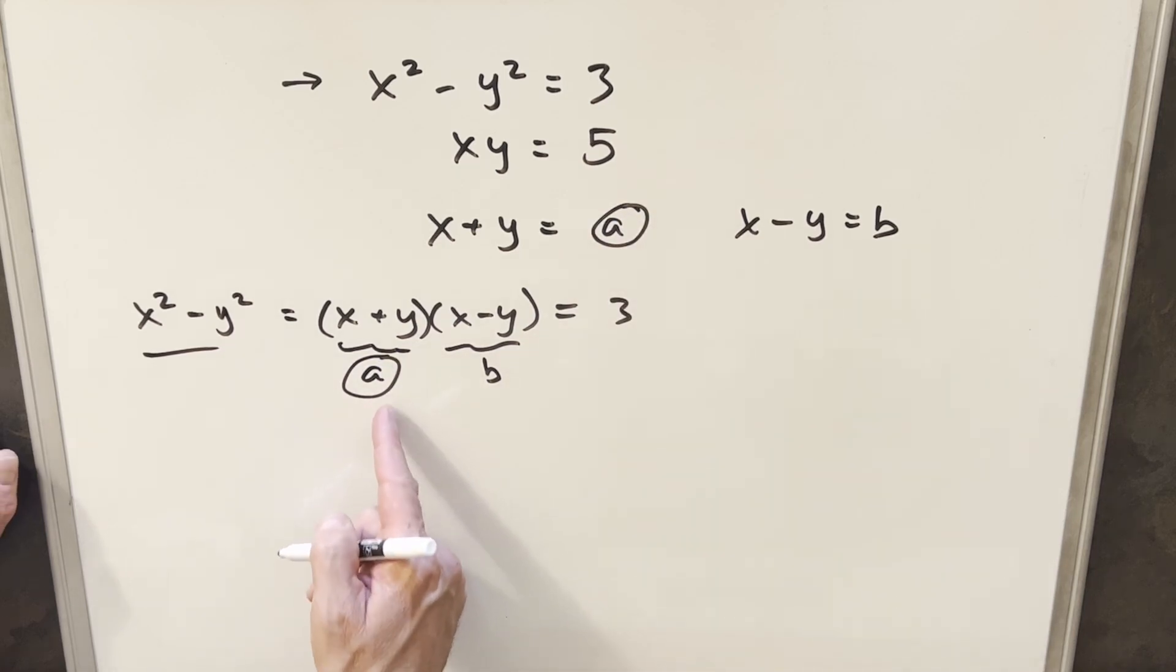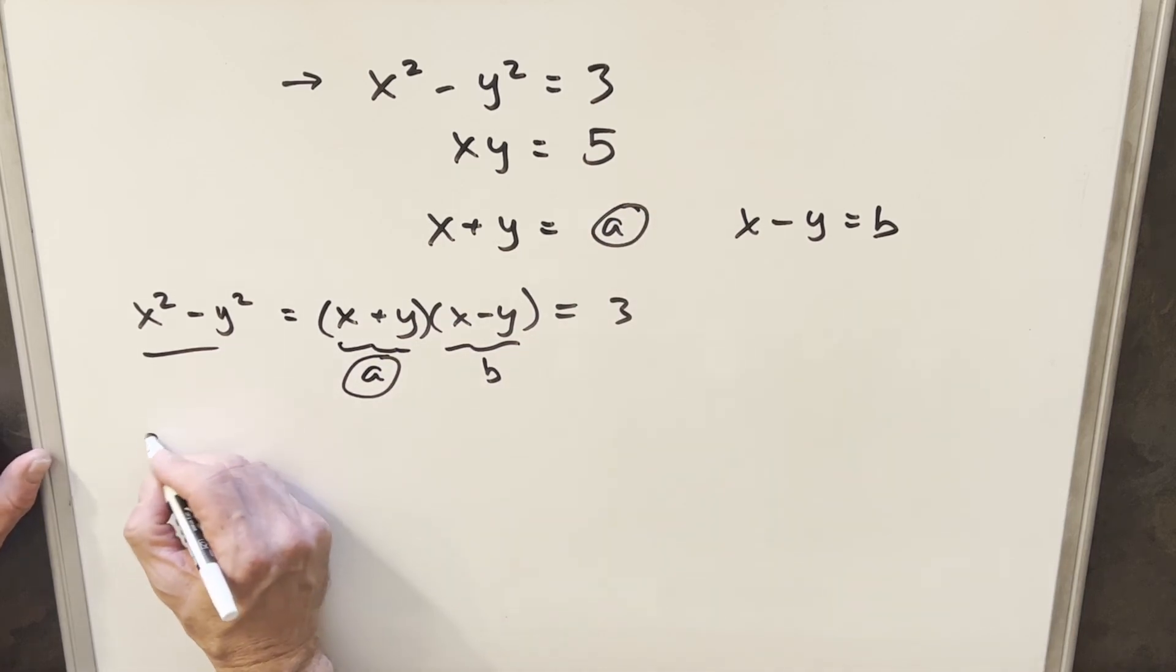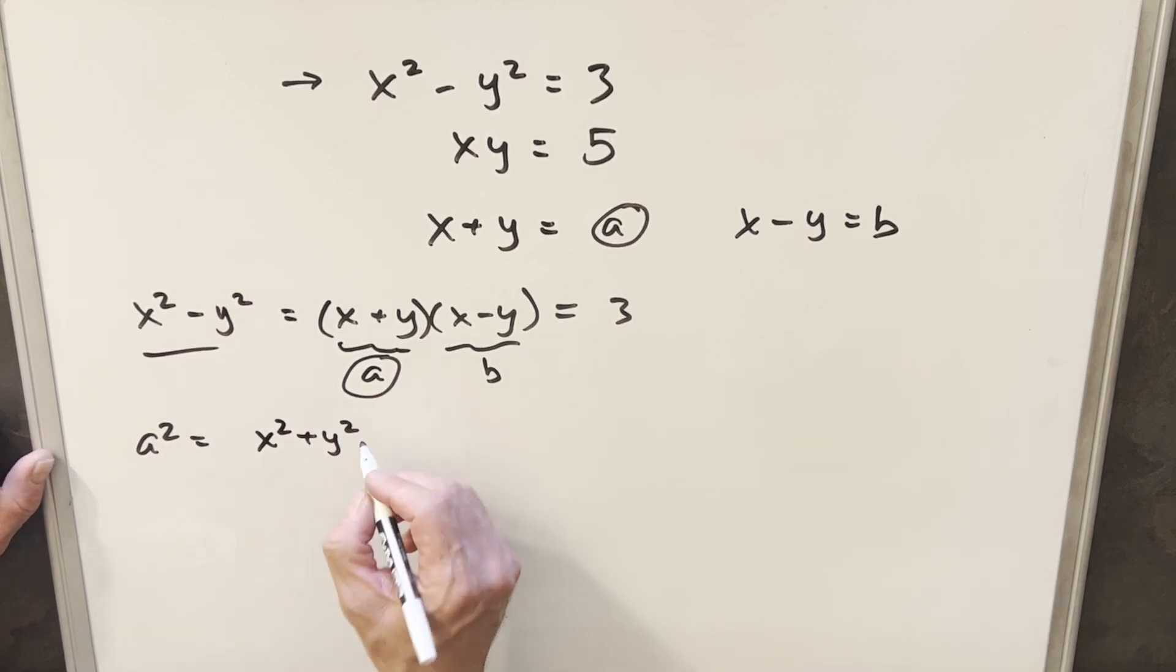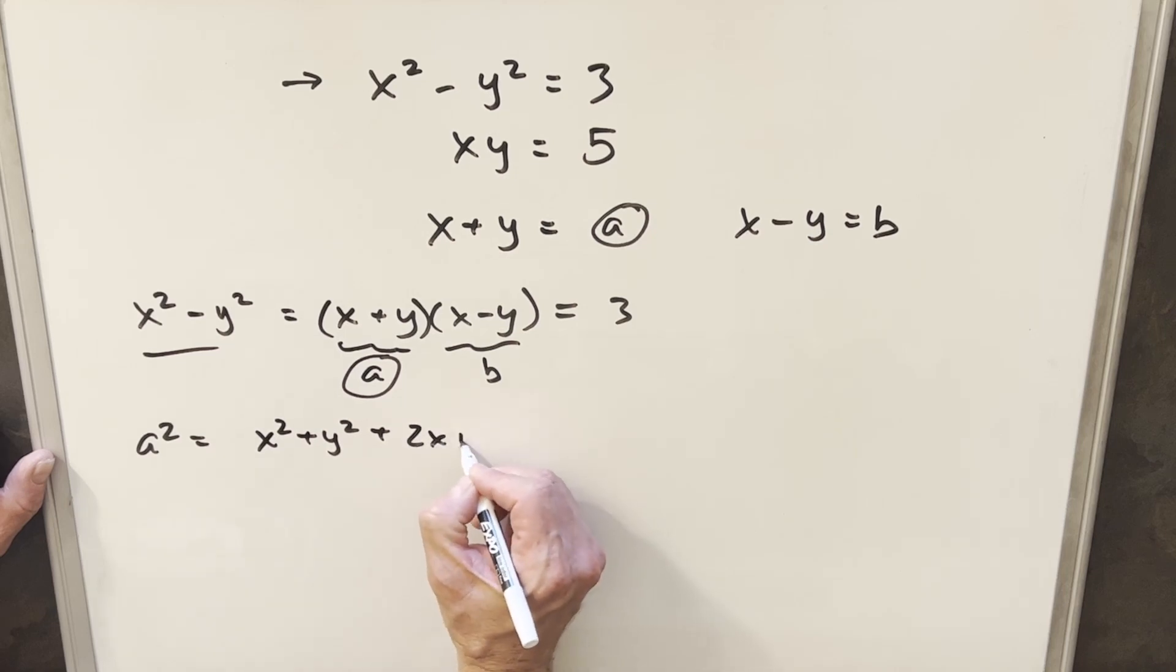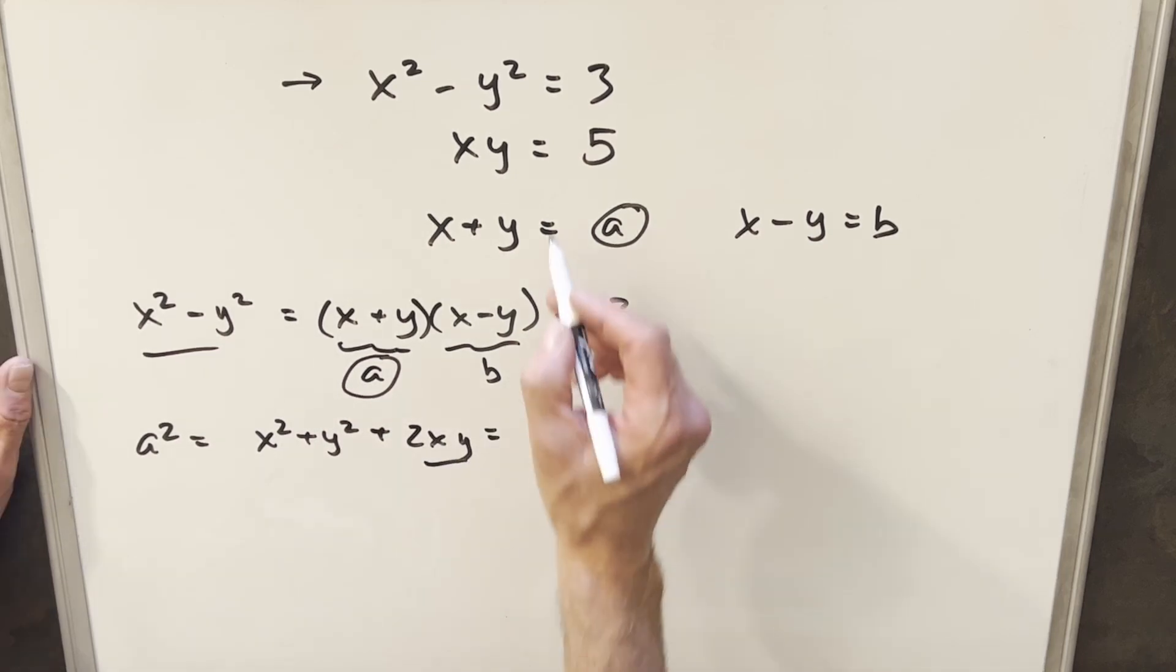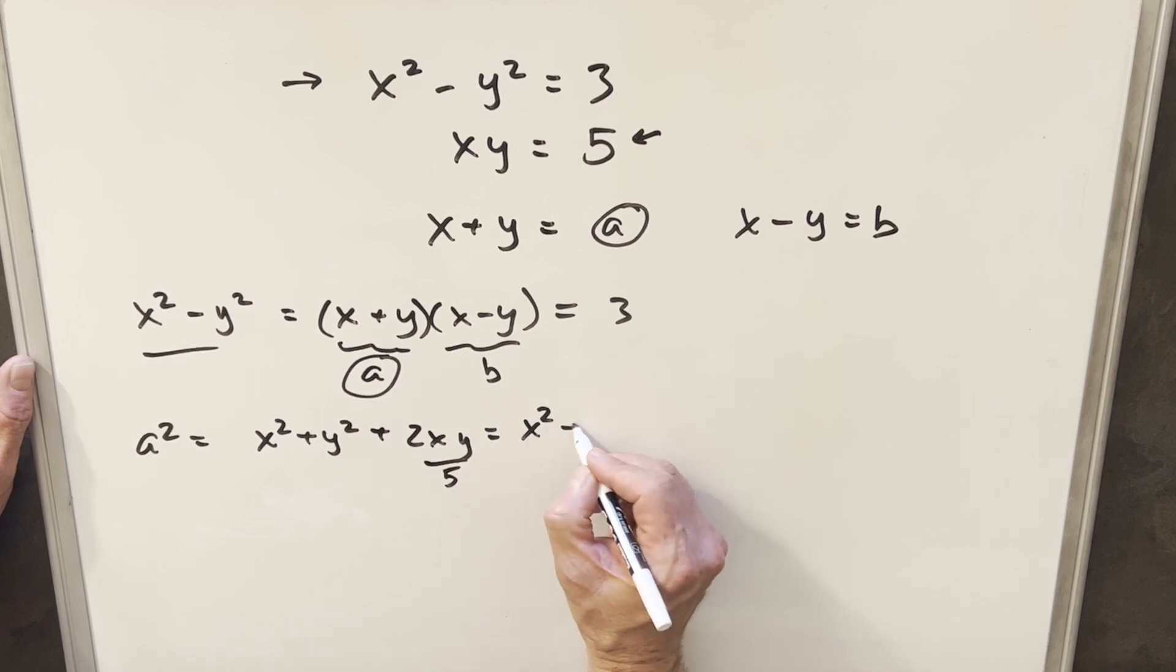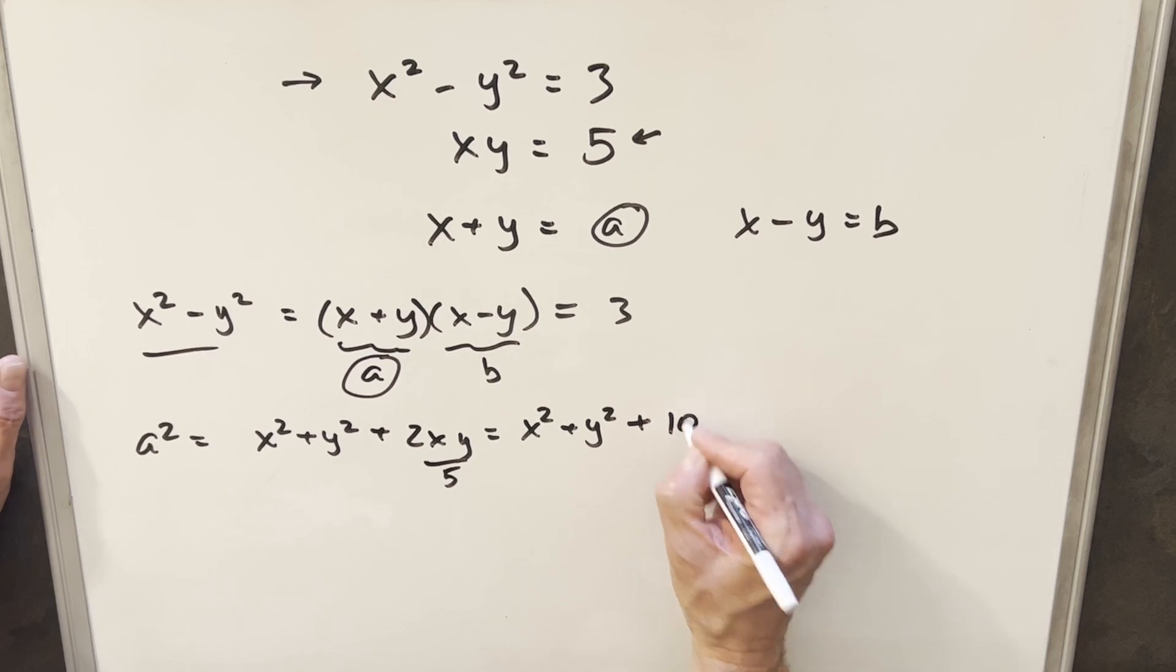I'm going to take this and let's just square this and see what happens. So if I look for my a squared, this is going to give me x squared plus y squared, just multiplying this out. And then we're going to have 2xy. Well, we know what xy is, we're given that right here. So that's 5. So this is going to be the same thing as x squared plus y squared plus 2 times 5 or 10.